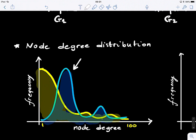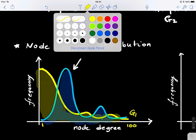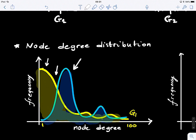For the yellow graph, let's call it G1, you notice that many nodes — the majority — have low degrees. So they're not densely connected to other nodes. But you have some nodes that have a very large number of connections to other nodes.